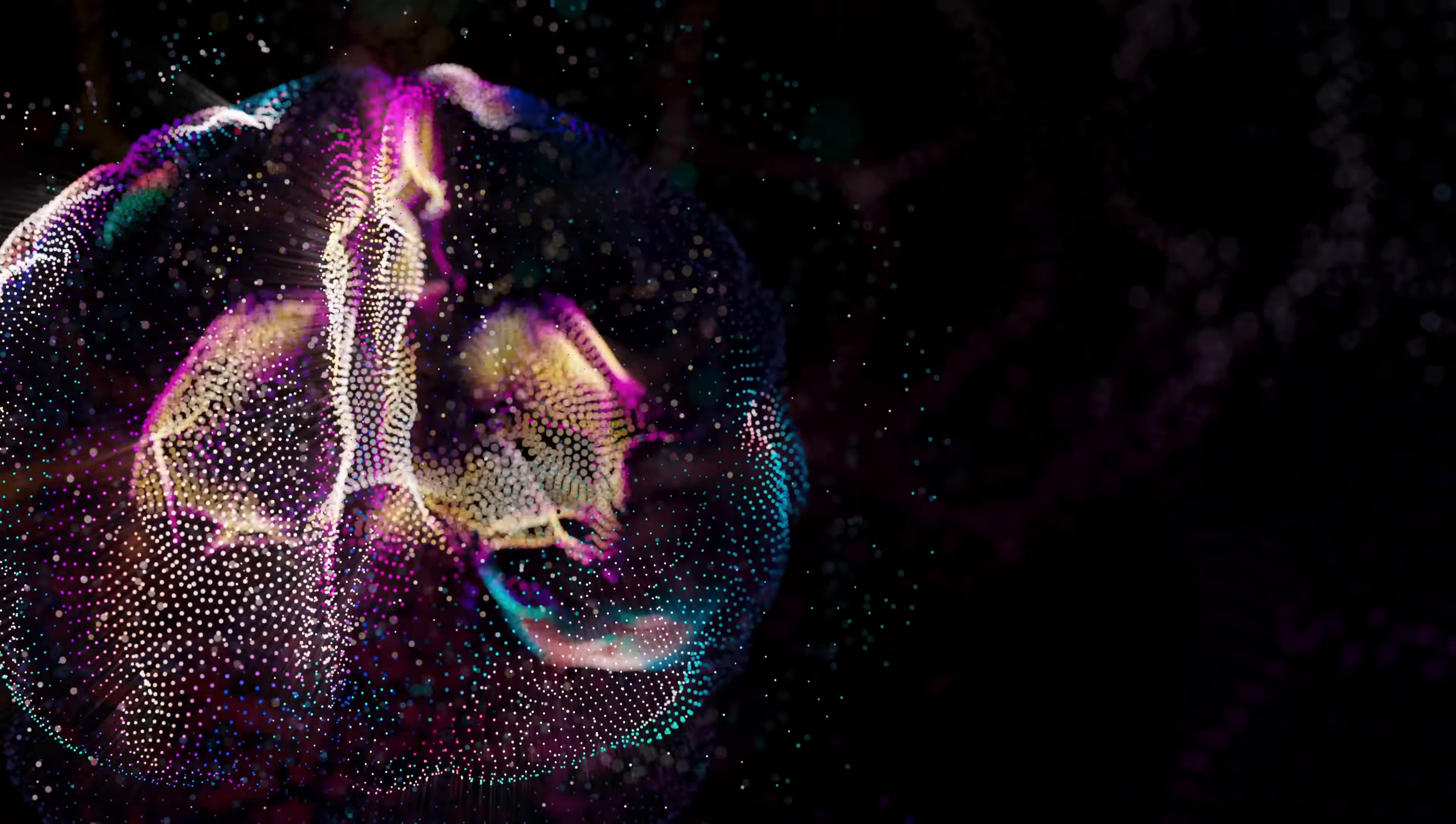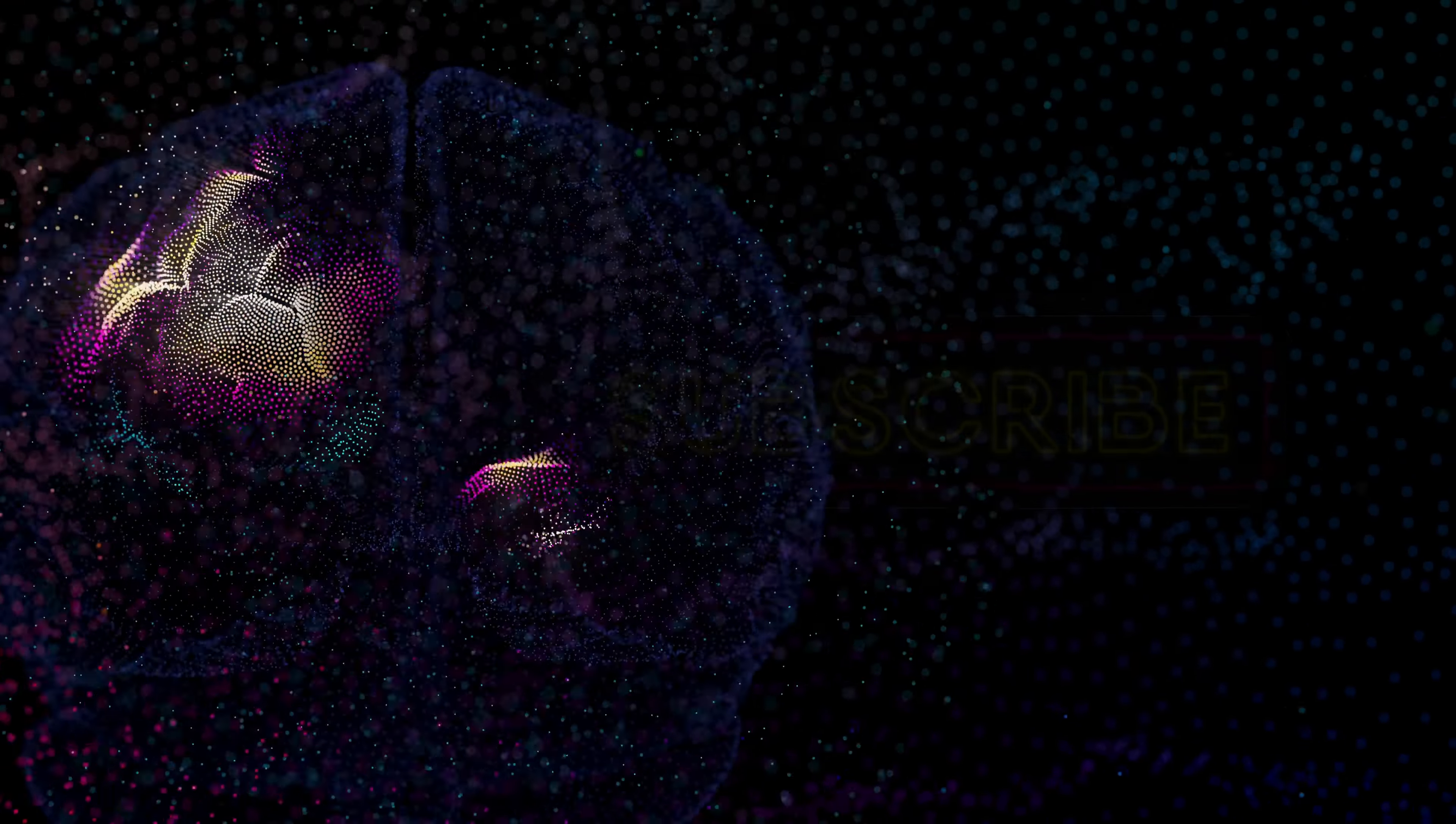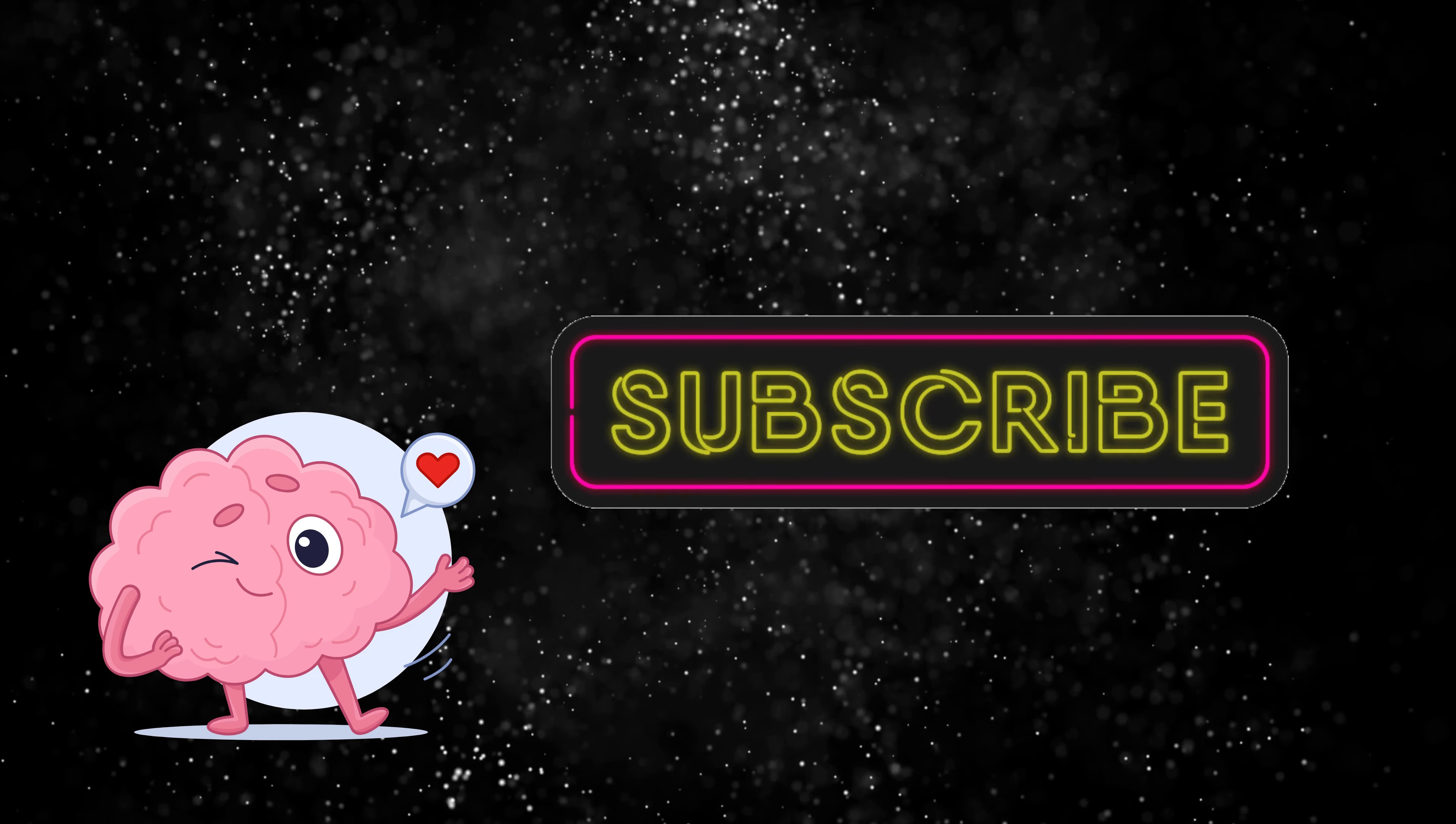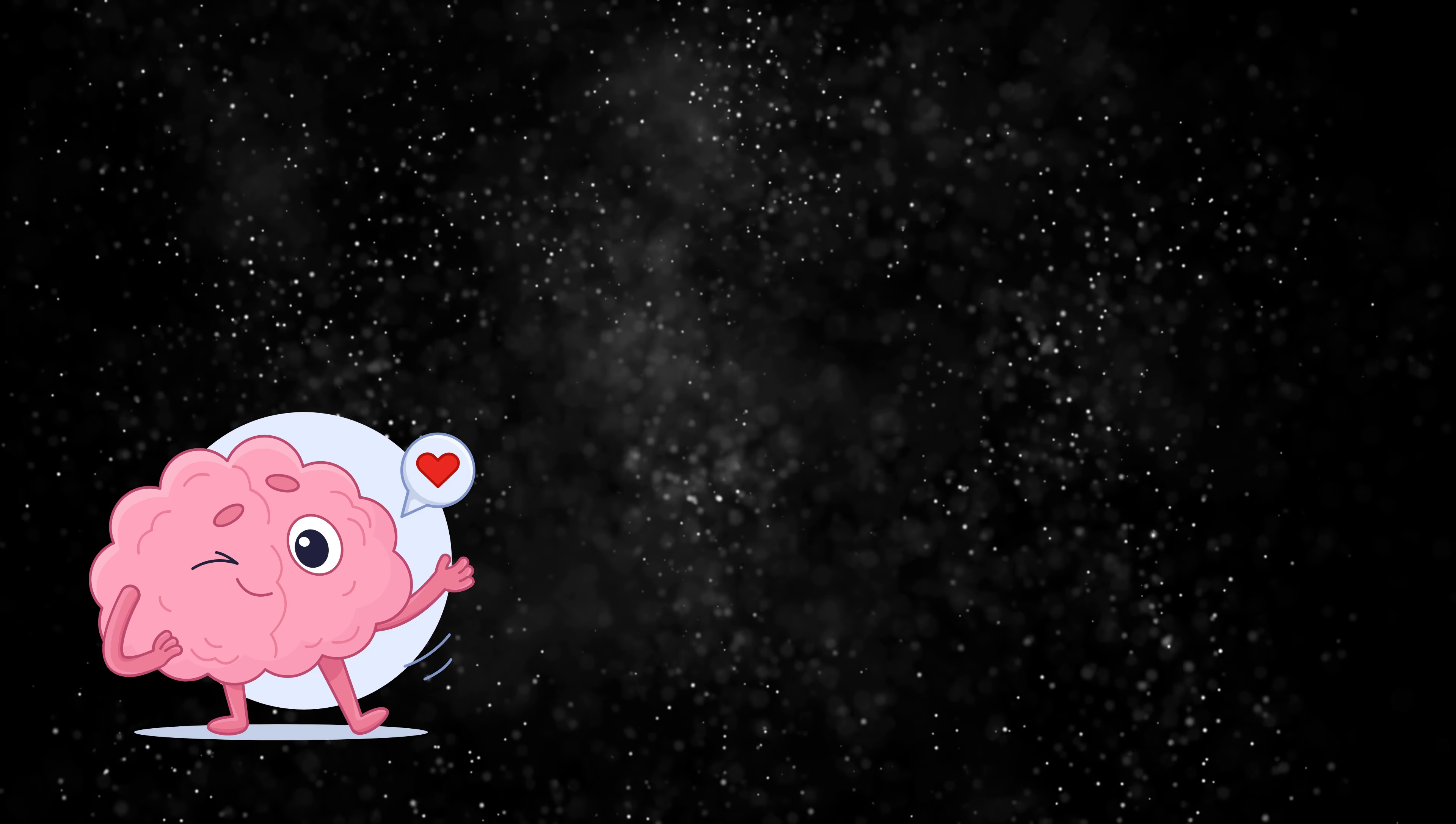So there you have it, a brief overview of the structure and function of the human brain. From neural communication to brain plasticity to the many disorders that can affect brain function, the brain is a complex and fascinating organ that continues to captivate scientists and researchers around the world. Thank you for watching, and don't forget to subscribe to Science in Seconds for more fascinating insights into the world of science.